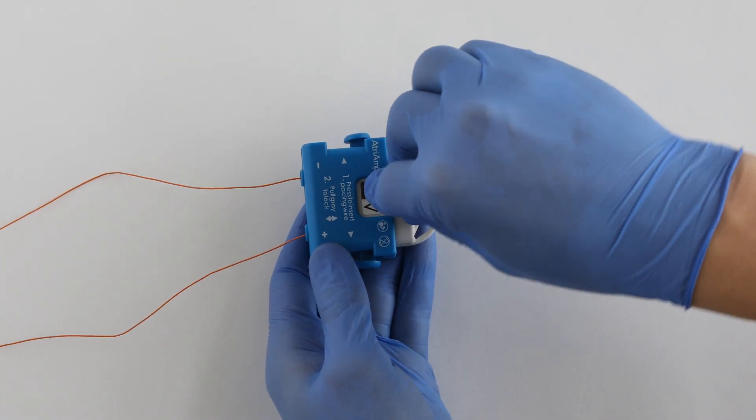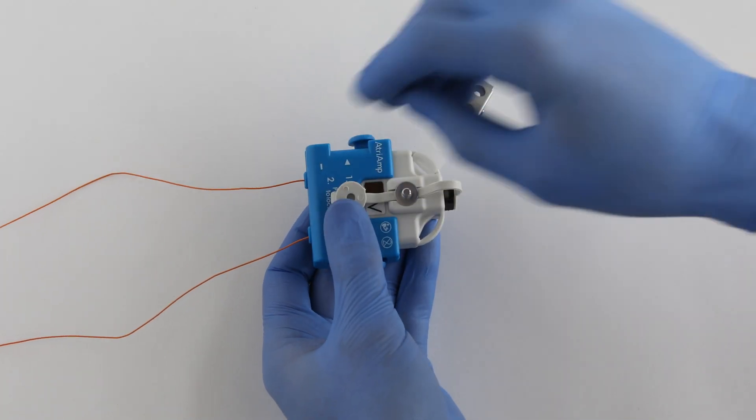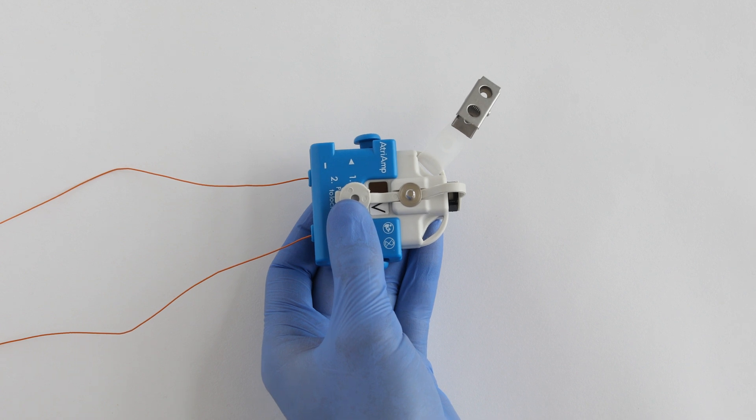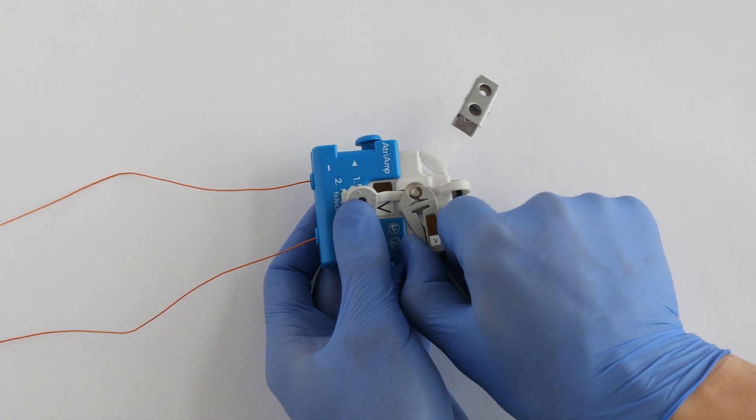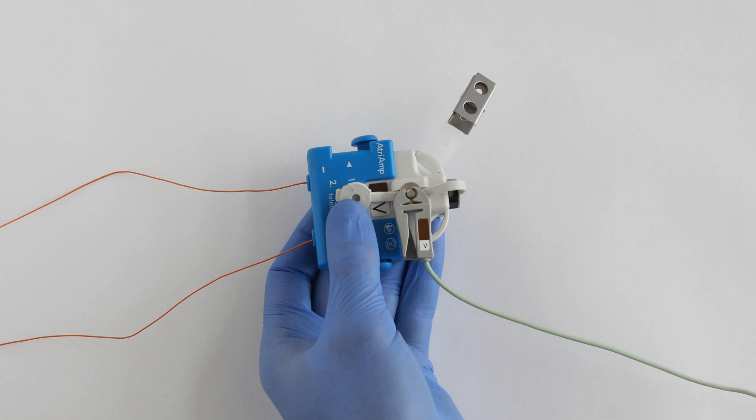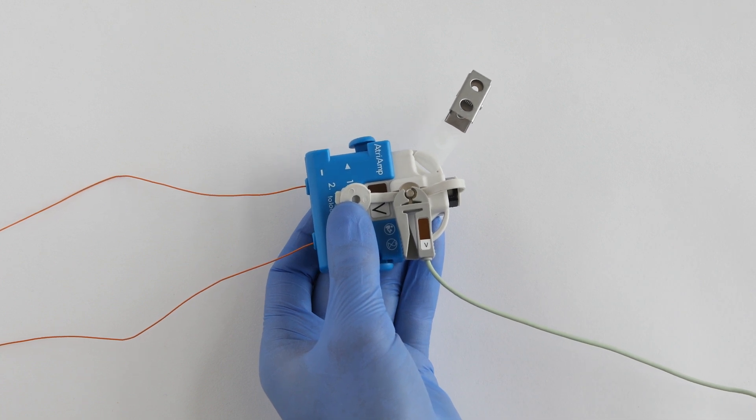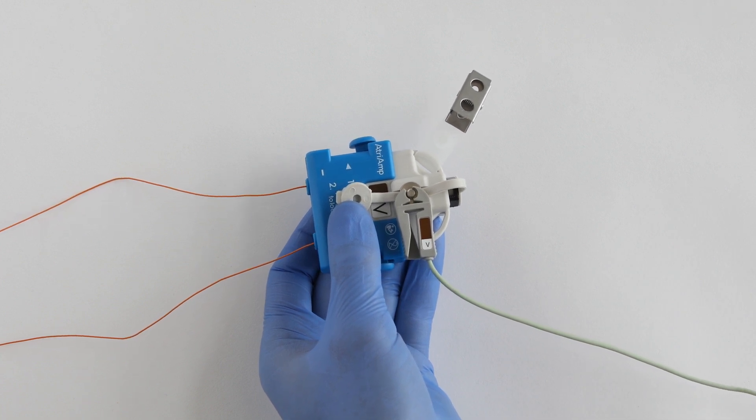Remove the stud cap and connect the V-lead wire from a Type CF defibrillation proof monitor to the AtriAmp V-connection. Due to epicardial wire placement variability, switching epicardial wire polarity from within the AtriAmp connectors may result in a more distinct atrial electrogram.